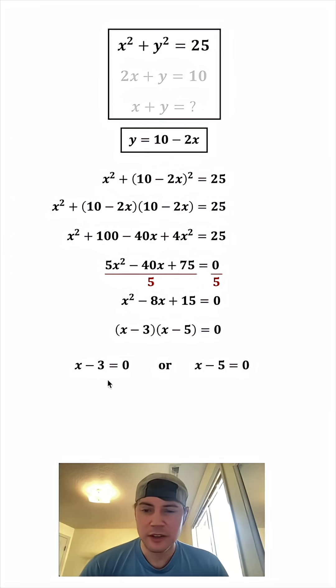So we have this or this. And if we add 3 to both sides, we get X equals 3, and if we add 5 to both sides, we get X equals 5. So X can be either 3 or 5.